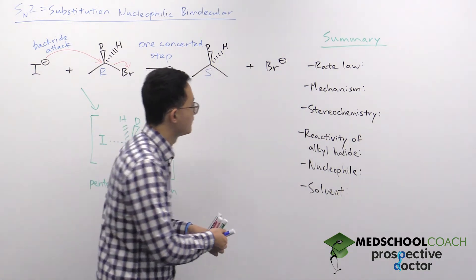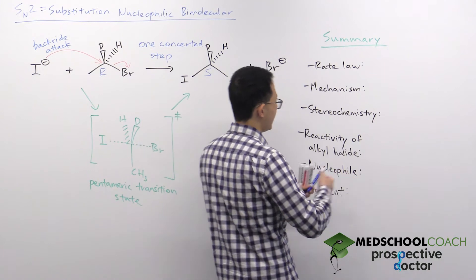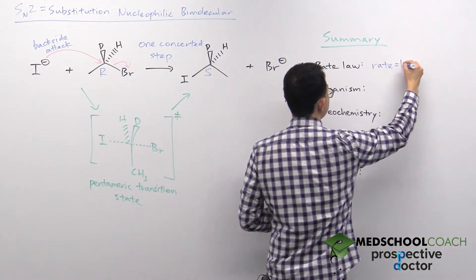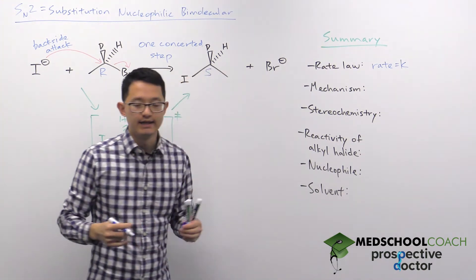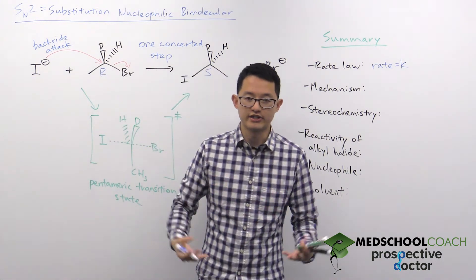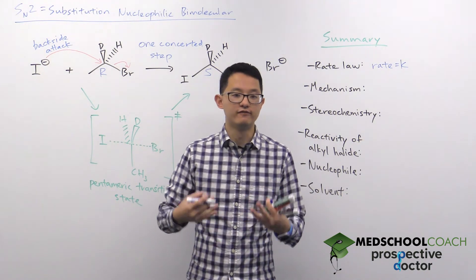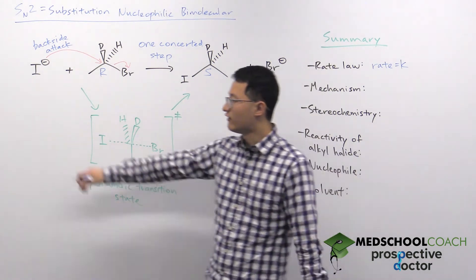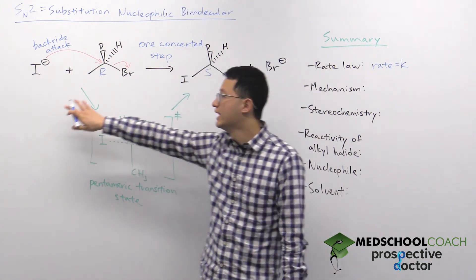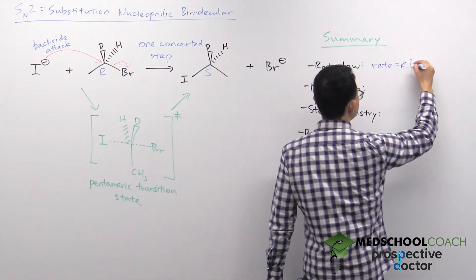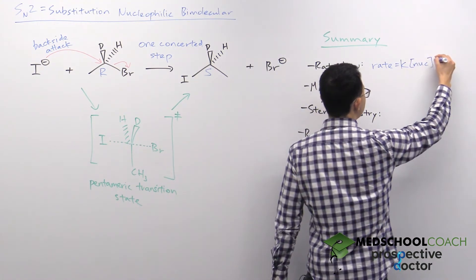For the rate law, we know from general chemistry that the rate law is always going to start with K, the rate constant, and then it's going to be multiplied by the concentration of the reactants that are involved with determining the reaction rate. In this case, it's going to involve both the nucleophile as well as the electrophile.